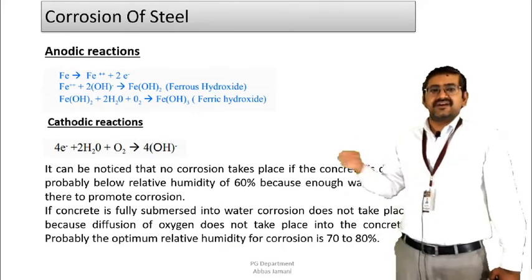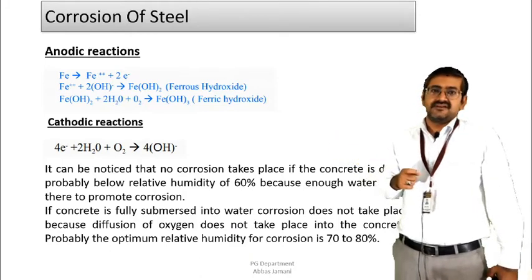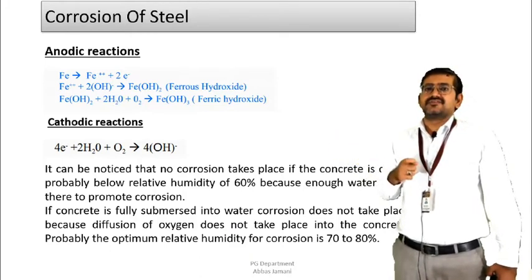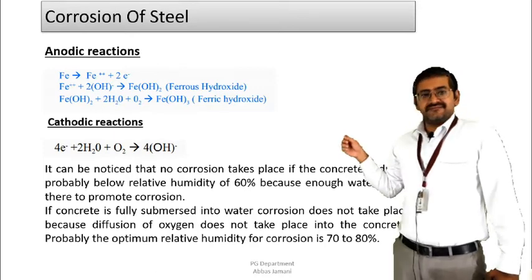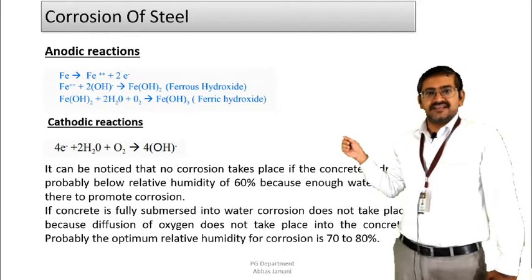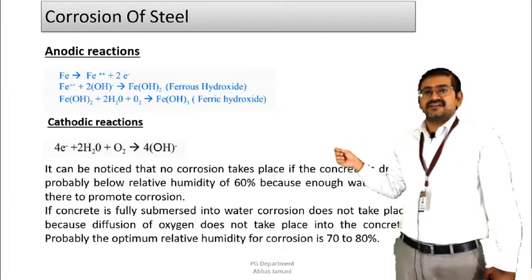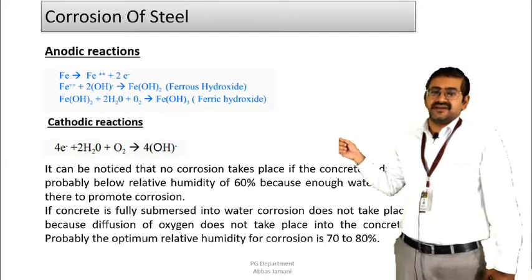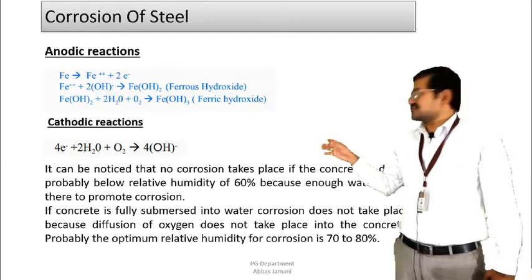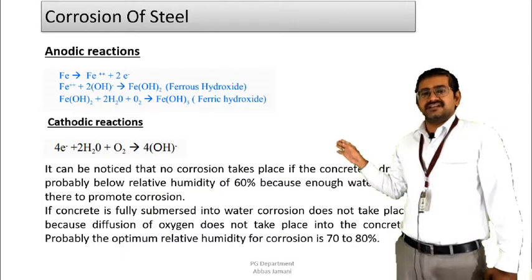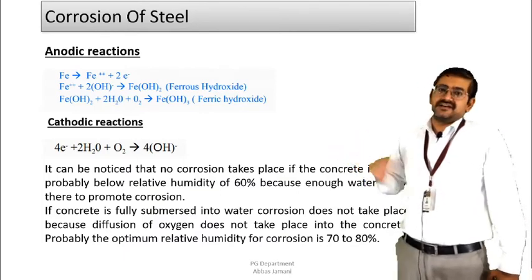As far as the anodic reaction is concerned, Fe²⁺ — that is iron — is the most important ingredient. This Fe²⁺ is going to release electrons. Then it is going to come in contact with hydroxyl ions, forming ferric hydroxide. This ferric hydroxide then reacts with water and oxygen, and as a result ferrous hydroxide is formed.